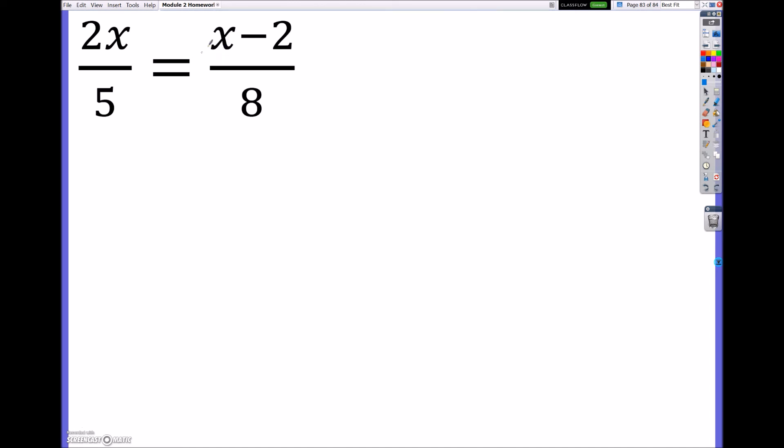Now the easiest, simplest way to do it to get rid of these denominators is just multiply, cross multiply like this. You could multiply both sides by 40 to get the same thing, so to do like a clearing the fraction. But the easiest, simplest way, I would say, is just cross multiply.